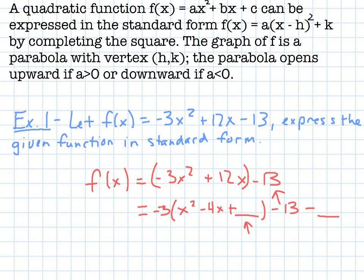Once I factor out that negative 3, I'll look at my b value of negative 4 and take that and divide it by 2, and then square it to get me my new c value, which is 4.